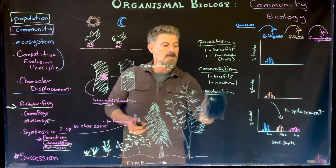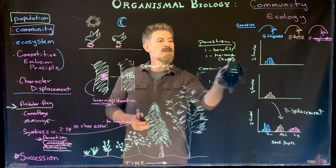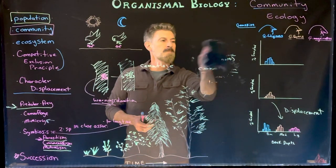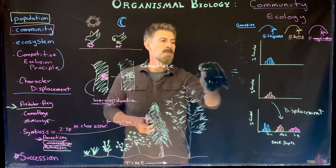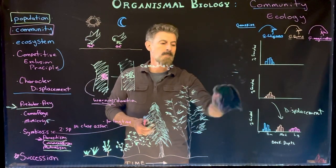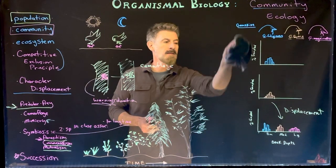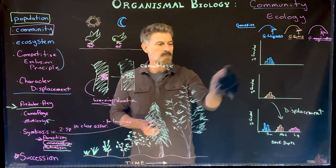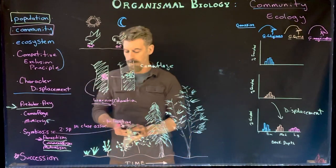Those are the types of symbiotic interactions — parasitism, commensalism, and mutualism. They are definition-based, so you just really need to know what each of them means, and they're pretty straightforward.